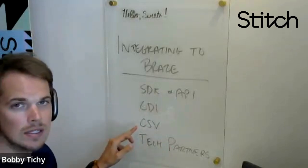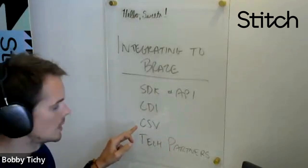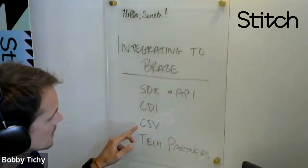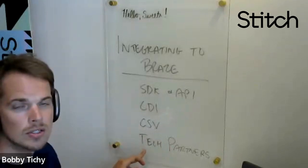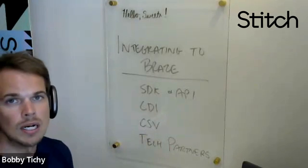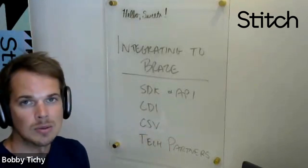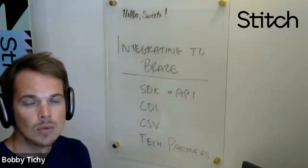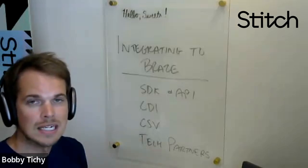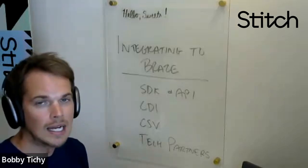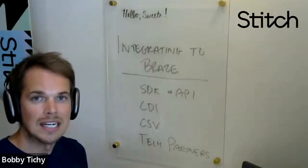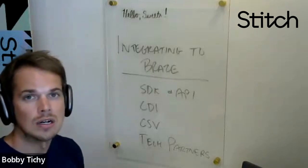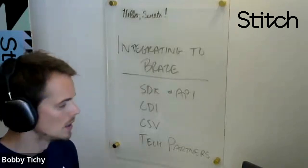Next is by CSV — if you have a use case for a flat file, through an S3 bucket or through the interface itself. Lastly, our tech partners. This is where Braze has worked with another company to build out what we think of as a productized integration, where some platform has taken their API and their data and created a connection, or they've normalized that data to be able to share it with Braze and vice versa.